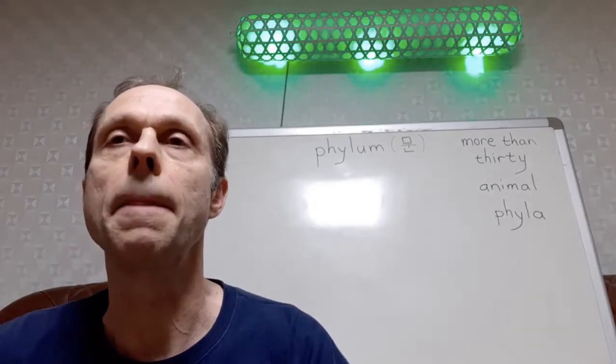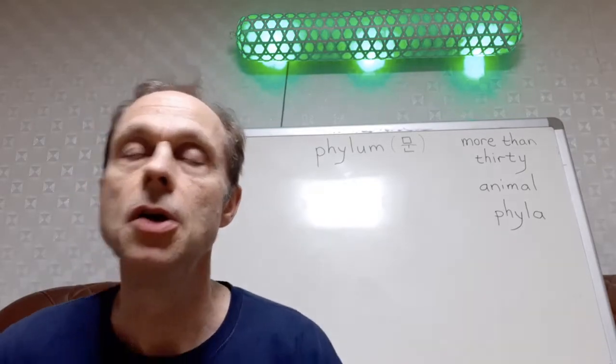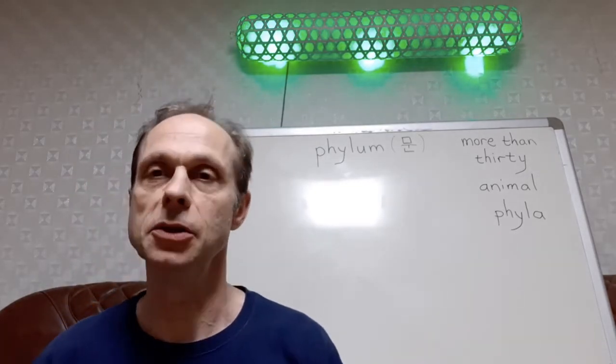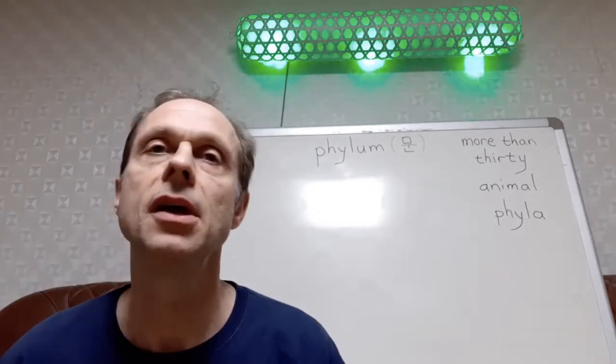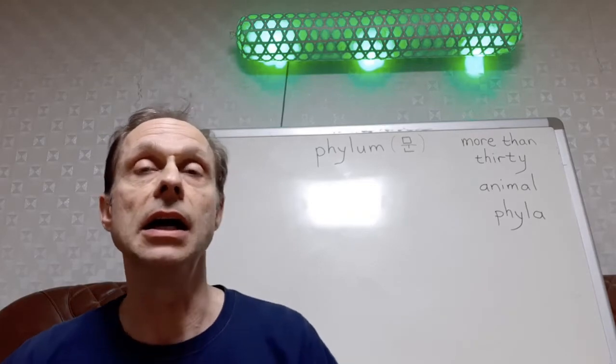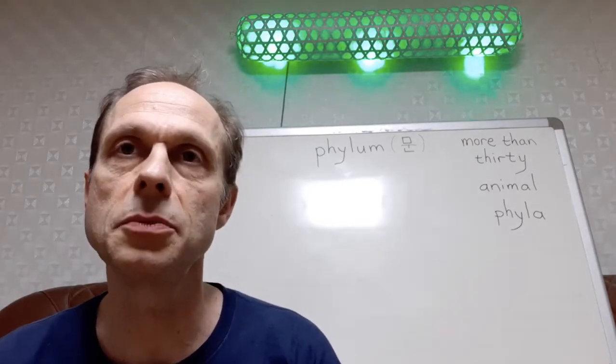And the other 20-some thousand species or so are land-dwelling animals. Another thing about vertebrates: vertebrates are big, mostly really big. Having a backbone helps to be really big. There are, like I say, 50-some thousand vertebrates total.